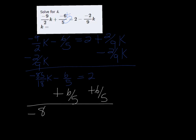We have negative 85 over 18k equals 16 fifths.